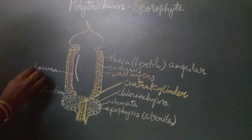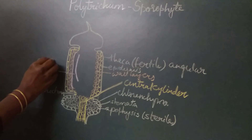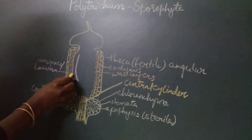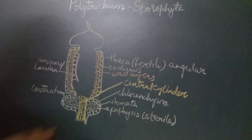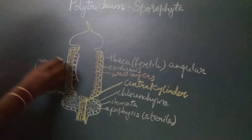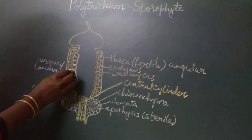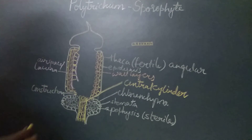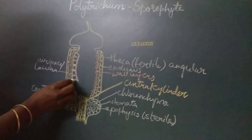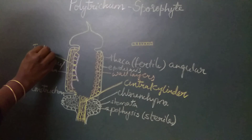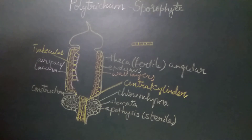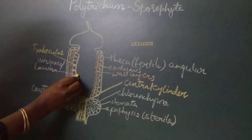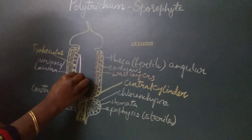The wall layer is followed by an airspace or lacuna. This airspace is traversed by a number of transverse walls, which are multicellular uniseriate structures — that is, each transverse wall has a number of cells all arranged in a single row. These transverse partitions are called trabeculae. The trabeculae are connected towards the outside to the wall layer and towards the inside to the wall of the spore sac.